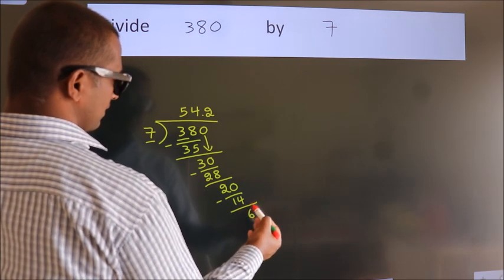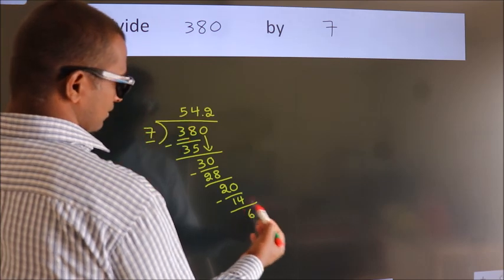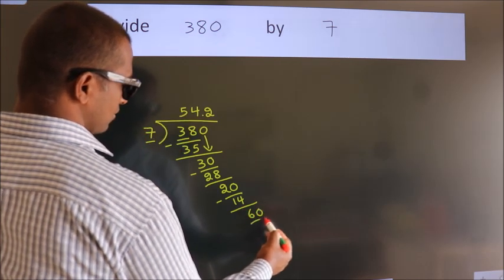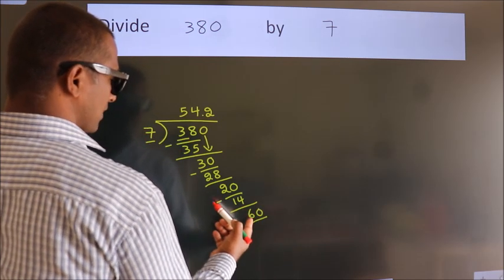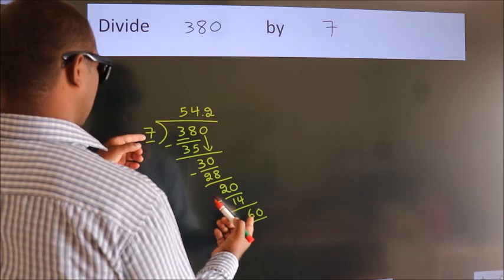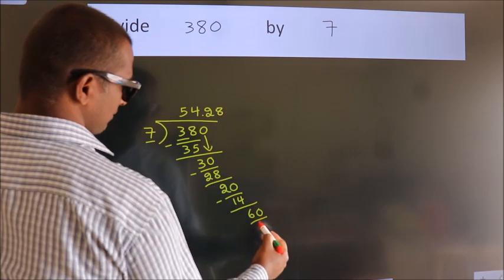After this, we already have the decimal. So directly take 0. So 60. A number close to 60 in the 7 table is 7 eights, 56.